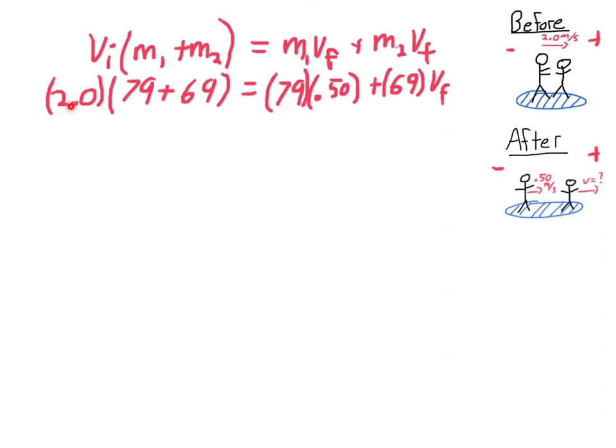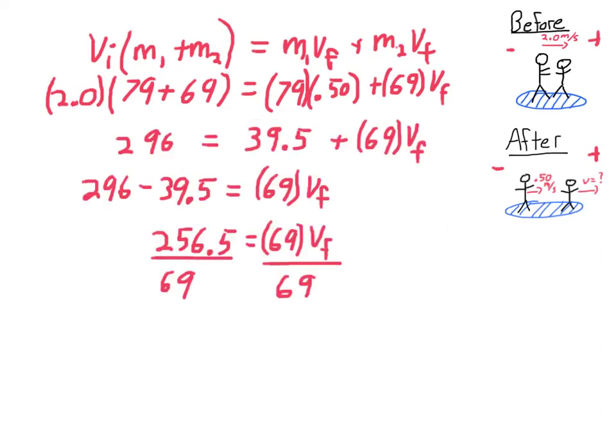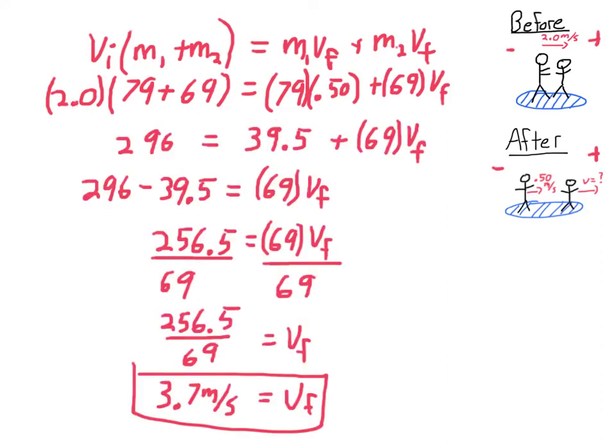So now it's just math. Plug and chug. So my final velocity for Sally comes out to be 3.7 meters per second there after Bob pushes her. So Bob ends up slowing down and Sally ends up speeding up quite a bit.